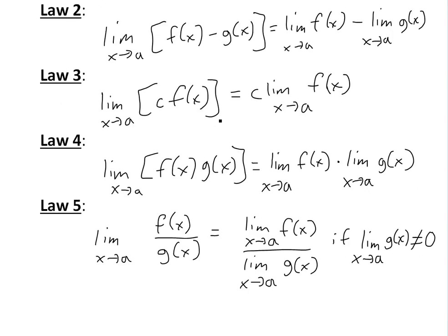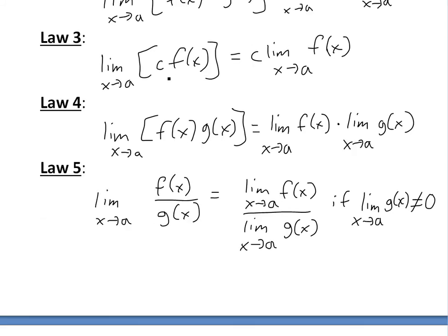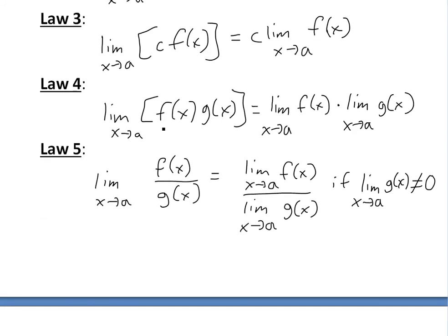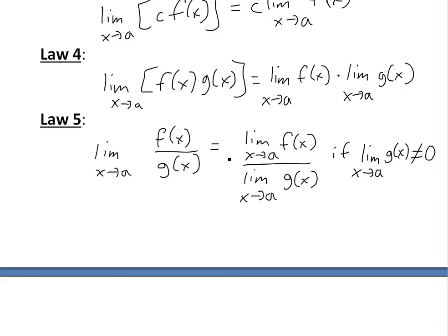I'll also do the proofs of these in later videos. This is a constant multiple law. You just take the constant out, constant C, of the limit. And if you have a product, you can just separate them and take a product of limits here.